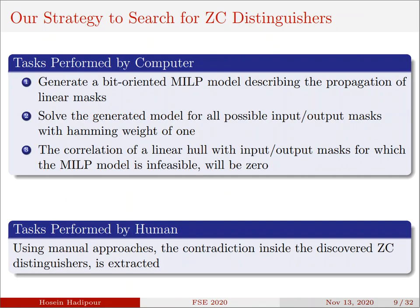Considering the tweak schedule, our strategy to search for zero-correlation distinguisher can be divided into two parts. At the first part, which is performed by computer, we generate a bit-oriented MILP problem to model the propagation of linear masks. Then, for all possible input-output masks with Hamming weight of 1, we call an MILP solver such as Gurobi to solve the generated model. The input-output mask for which the MILP problem becomes infeasible yields a zero-correlation distinguisher. At the second part, which is performed by human, the contradiction inside the discovered zero-correlation distinguisher is extracted using manual approach.